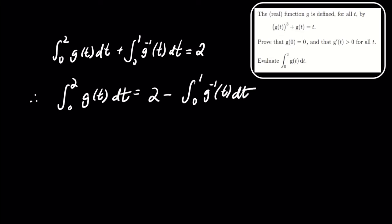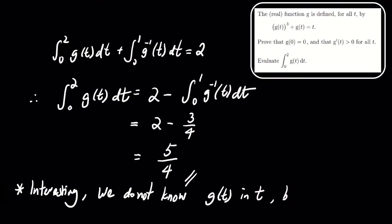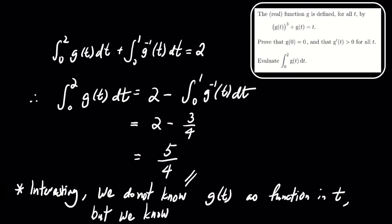Thus, we have the integral from 0 to 2 of g of t with respect to t equals 2 minus three fourths, which equals five fourths. Thank you!